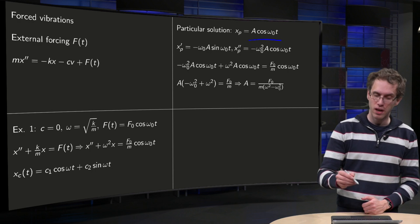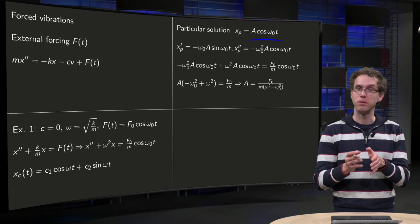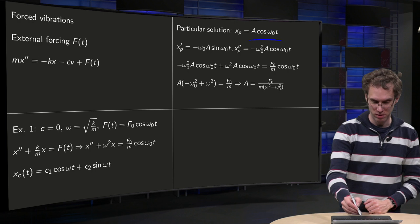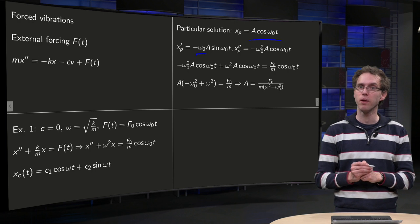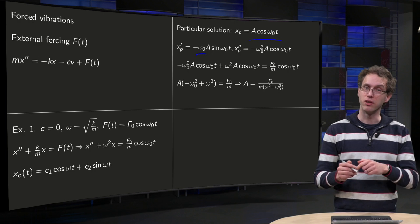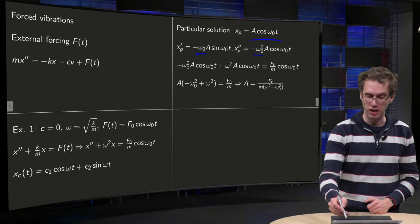Well, first you compute xp prime. So your cosine omega_0 t becomes minus sine omega_0 t times chain factor omega_0, so there we are. And then we differentiate again to find xp double dot, so we get another factor of omega_0, and the minus sine becomes a minus cosine omega_0 t.